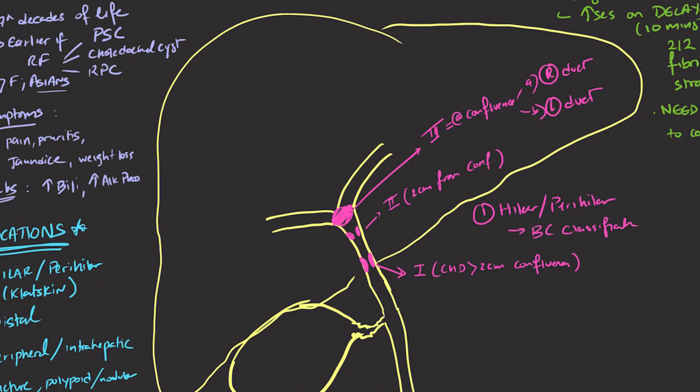And finally, the Bismuth-Corlette classification number four refers to a lesion that is at the biliary confluence, involves both the right and left hepatic ducts, or there's more multifocal disease seen in several segments of the biliary tree.